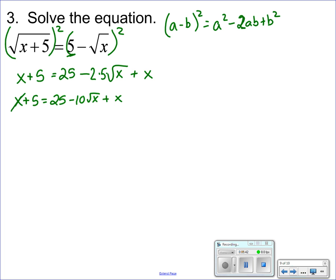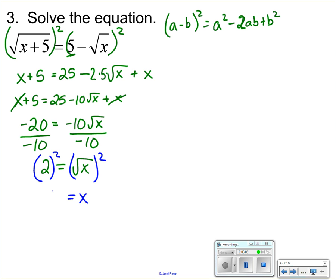The x's on both sides cancel. I'm going to subtract the 25 over, so I get -20 = -10√x. If I divide by -10, I get √x = 2. Now again, we're going to have to square everything again because I still have a radical. Therefore x is going to be 4.